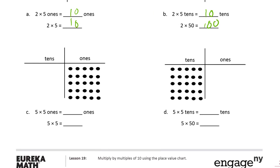And we have five rows of five ones. You can count it: five, ten, fifteen, twenty, twenty-five. Twenty-five ones, five times five is twenty-five.